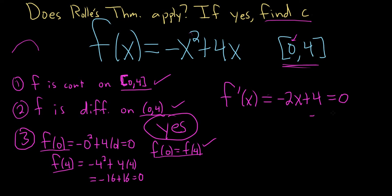So let's see, subtract 4. It'd be really bad to mess up here. This is negative 2x equals negative 4. Then divide by negative 2. So we get x equals 2.